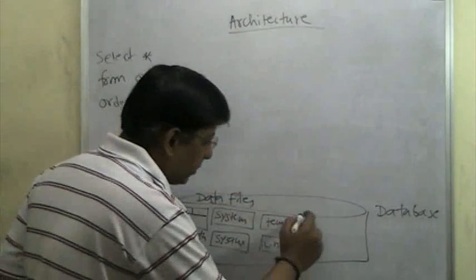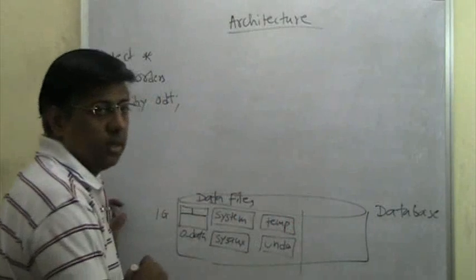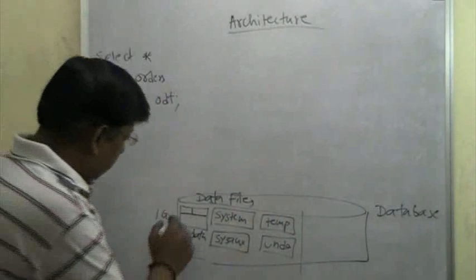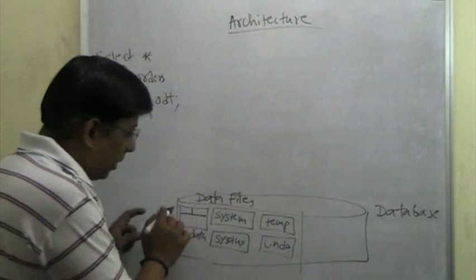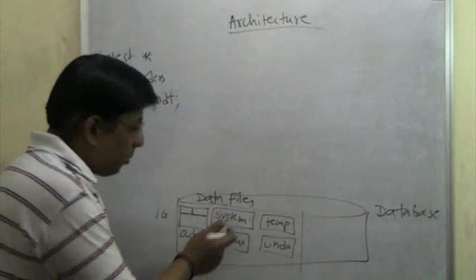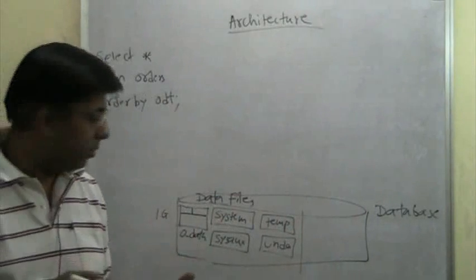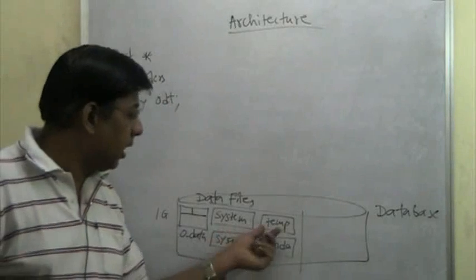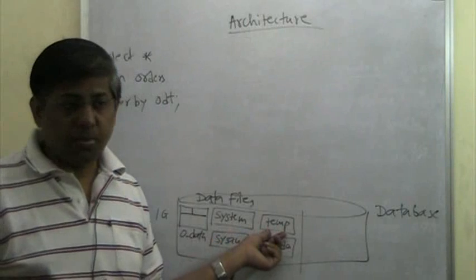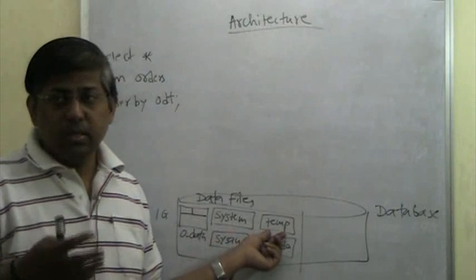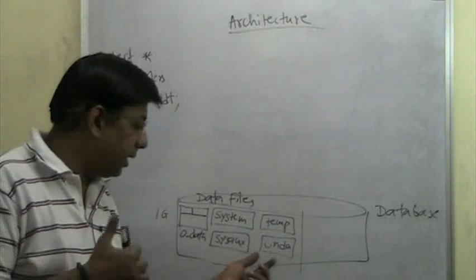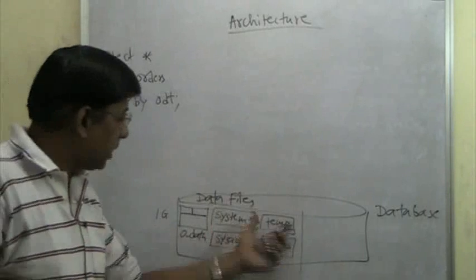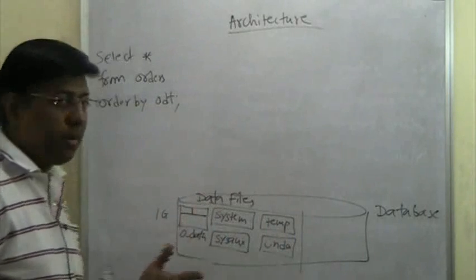Then there is another set of files which do not contain any data. Our main thing is the data. Our order data is only in the OData tablespace. The purpose of the system tablespace is the data dictionary. The purpose of SYSAUX is for certain tools like Oracle Enterprise Manager. The purpose of the temporary tablespace is to provide index creation, sorting, and so on. UNDO is to provide rollback ability.